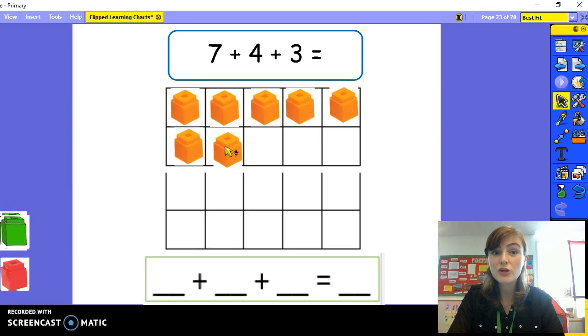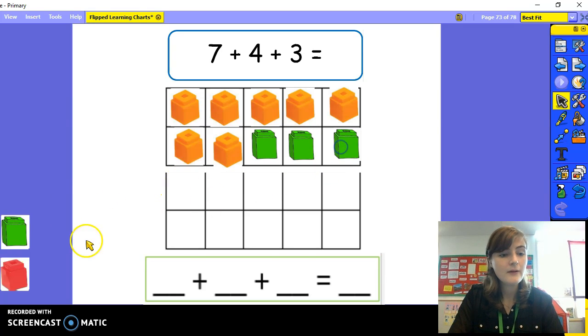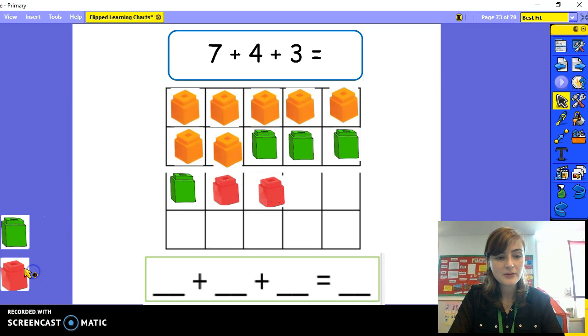Now I need four green cubes. One, two, three, four. And last, I need three red cubes. One, two, three.